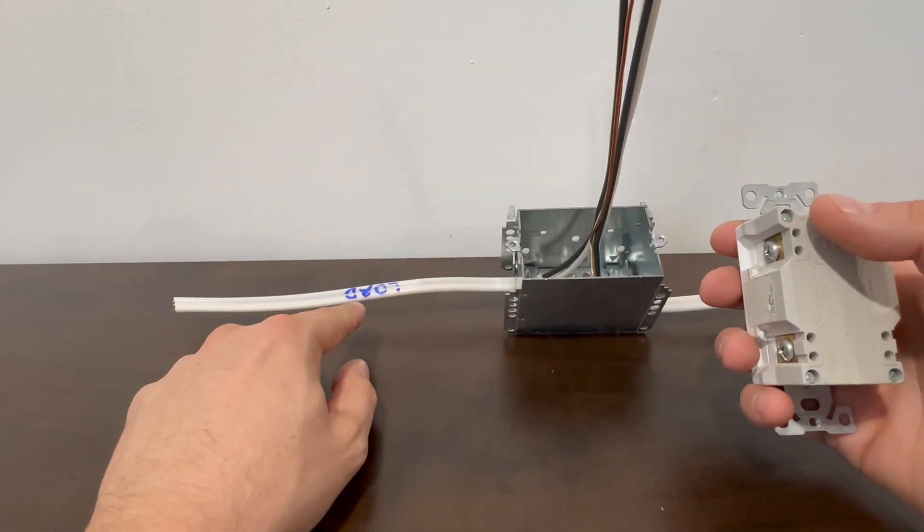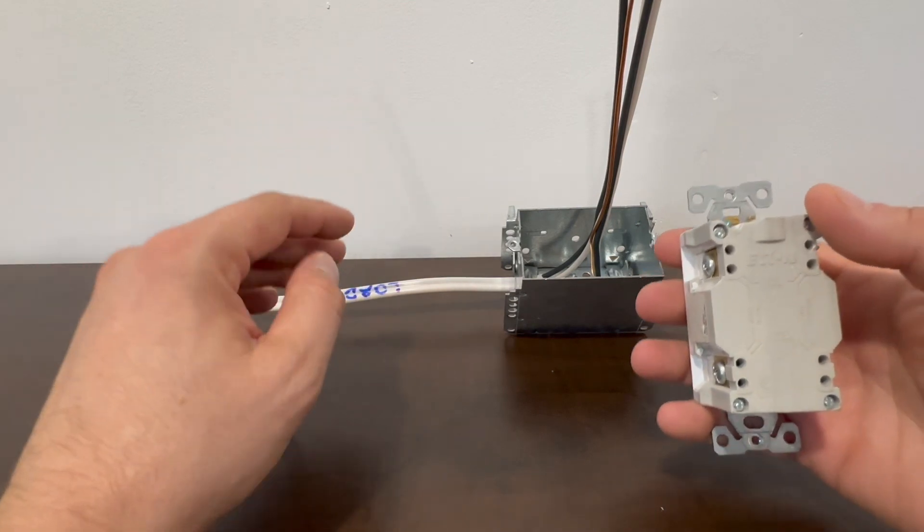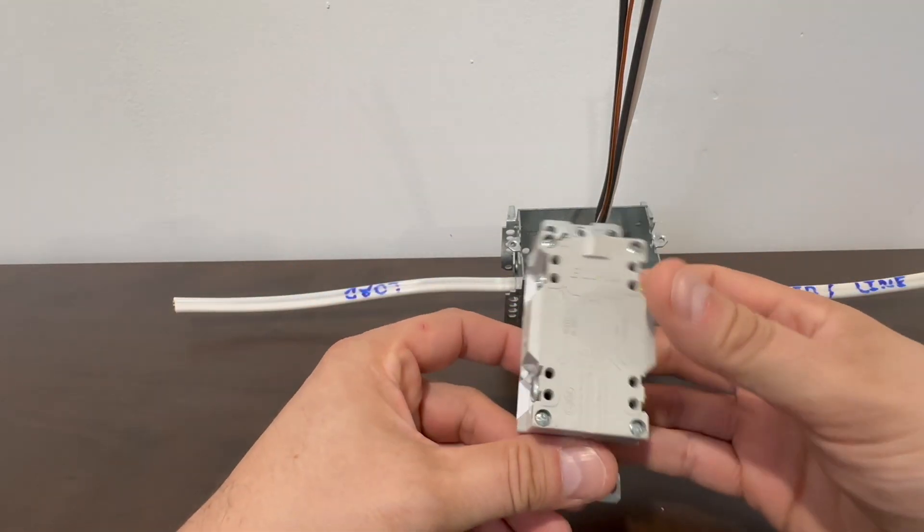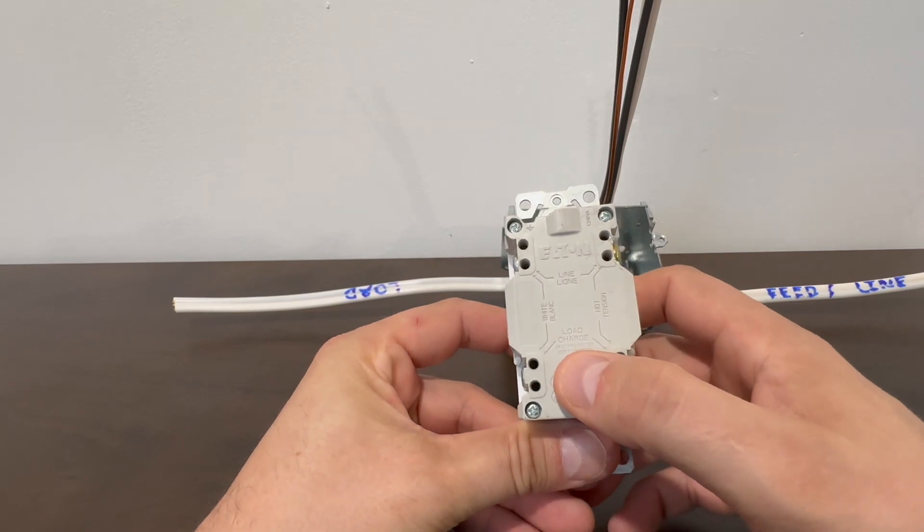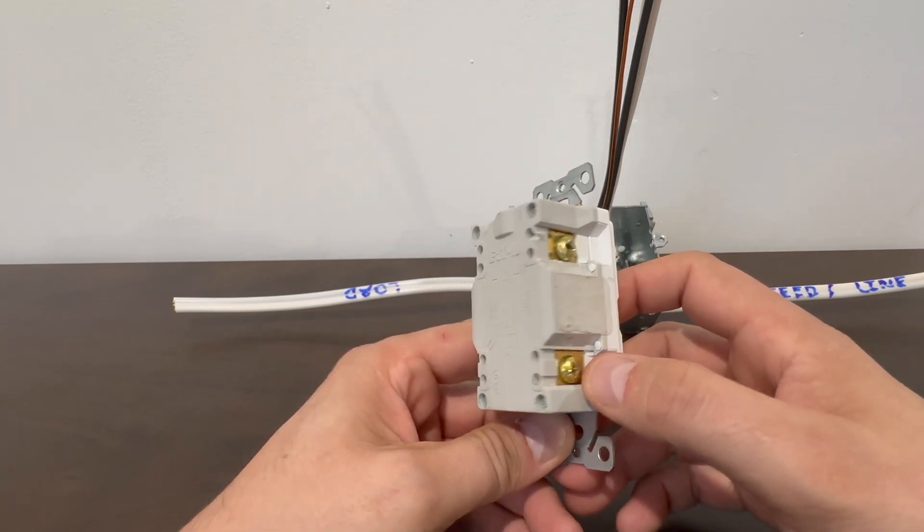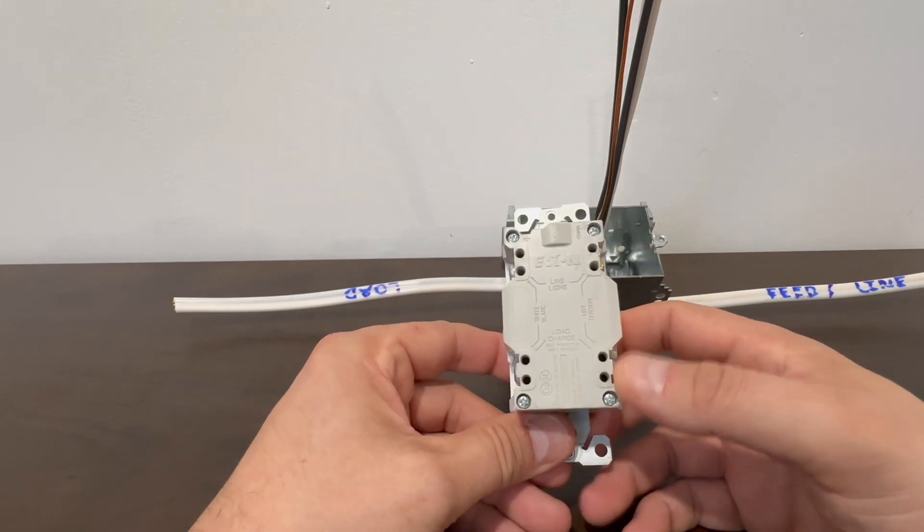On the load side, we have this other wire here that would be going to other receptacles or whatever else you're trying to protect with this GFCI. And they would attach again to the load side of the receptacle brass to black, silver to white.